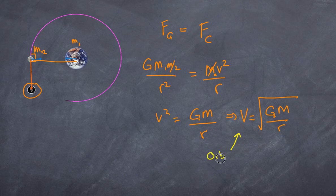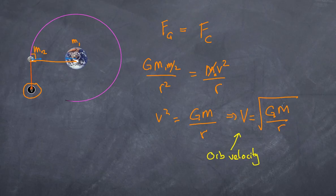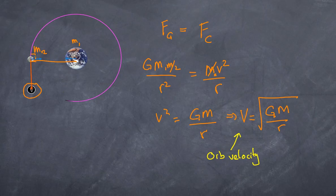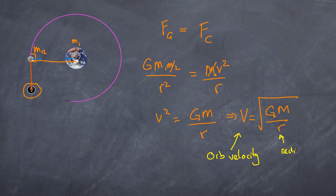This v represents the orbital velocity — the velocity at which the satellite moves in orbit. Notice that G and M, the gravitational constant and the mass of the central body, are constants in this equation. Importantly, the mass of the satellite has no bearing on it. If I replaced the moon with a one-gram pebble at the same radius, it would have exactly the same orbital velocity, because the satellite's mass is not involved in this equation.